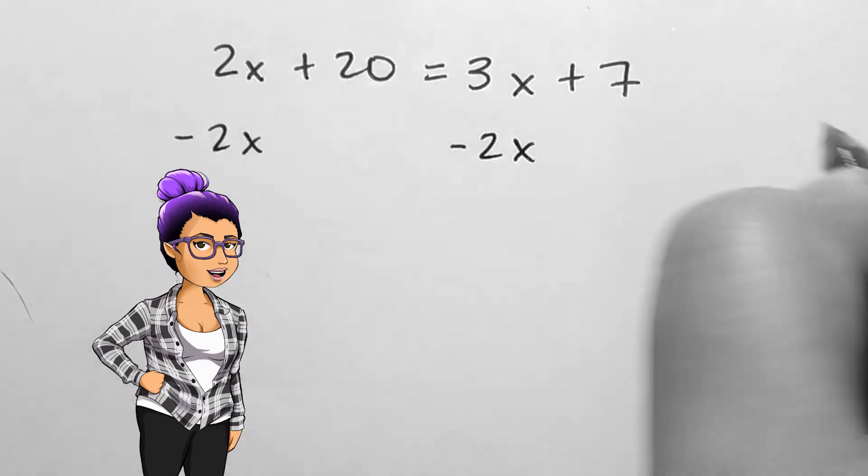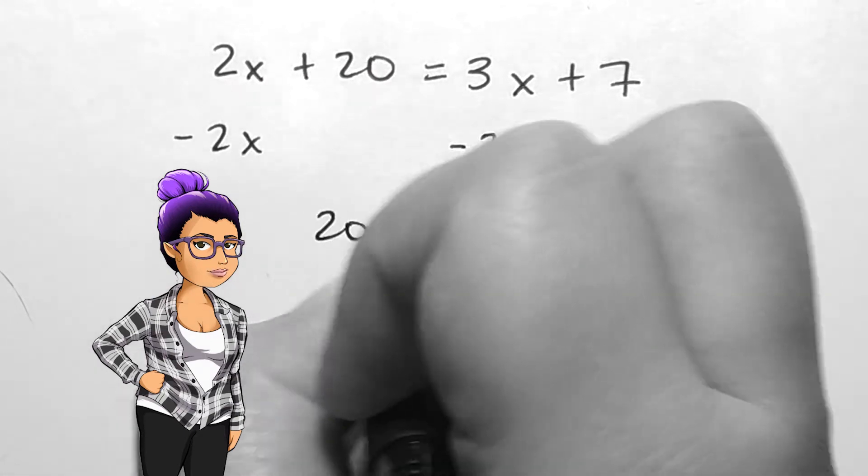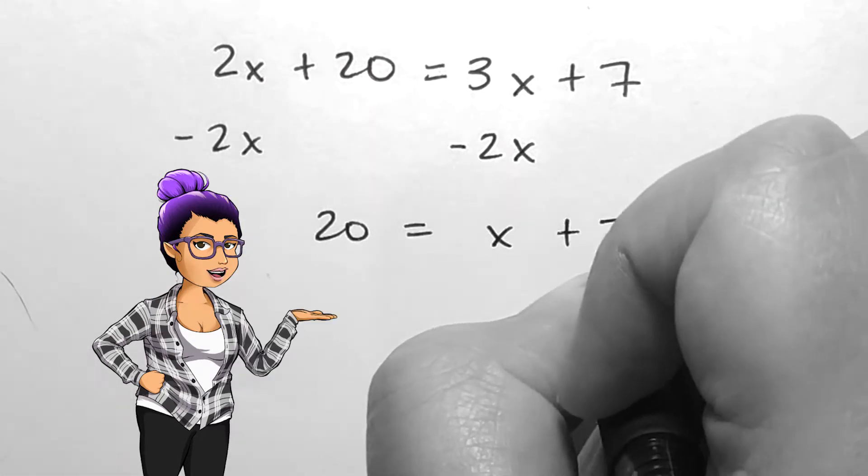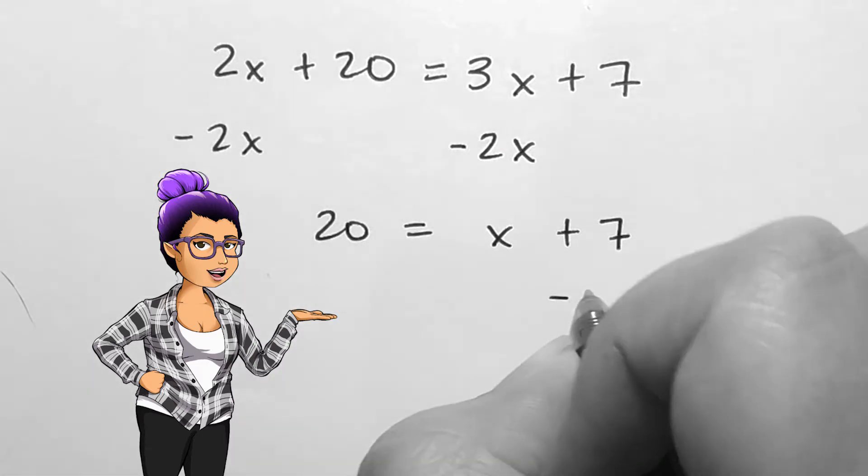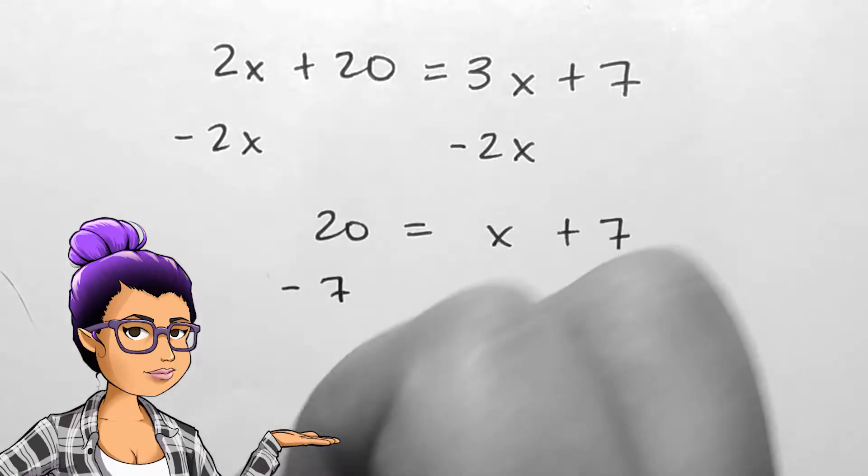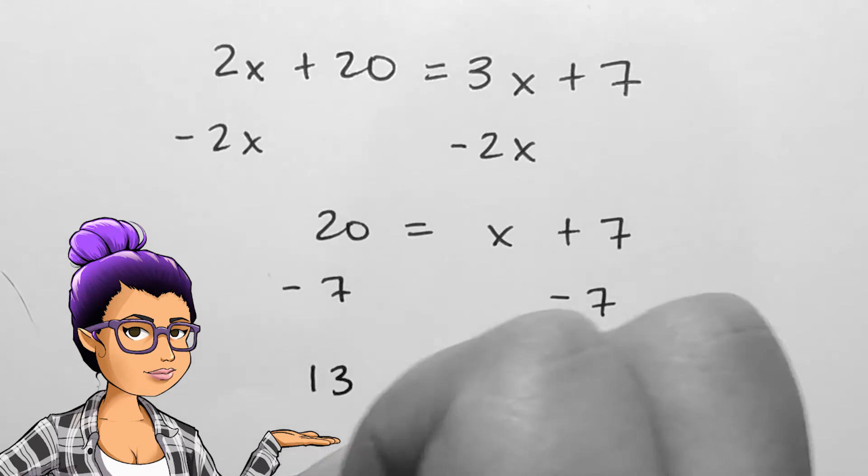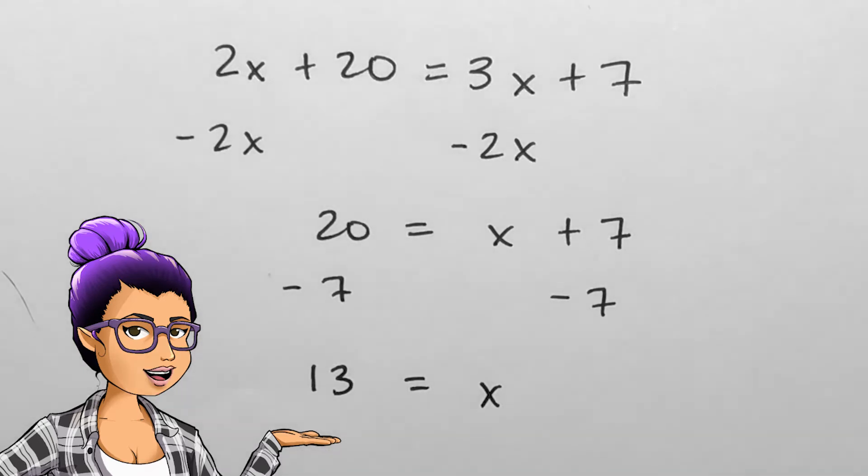In order to avoid a negative coefficient or multiplier on the x, let's subtract 2x on each side, leaving 20 equals x plus 7. Now we can subtract 7 from both sides, giving the answer 13 equals x.